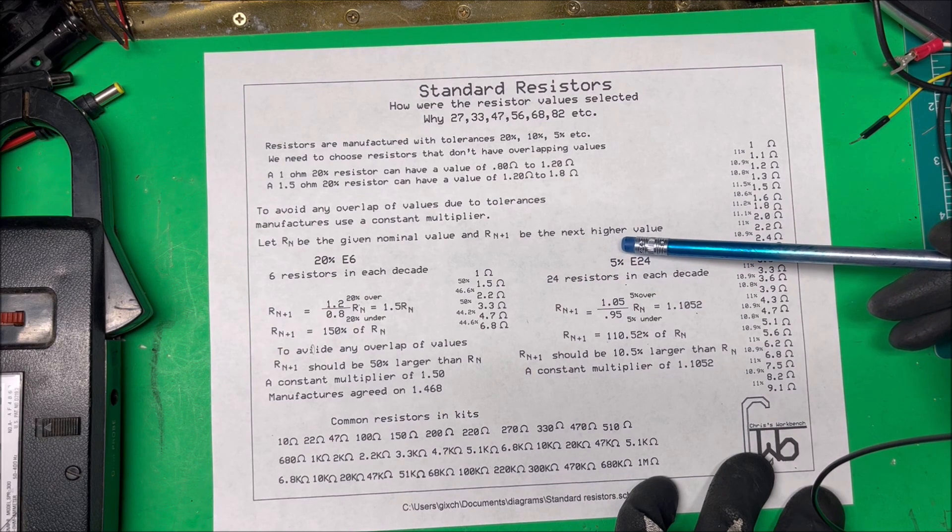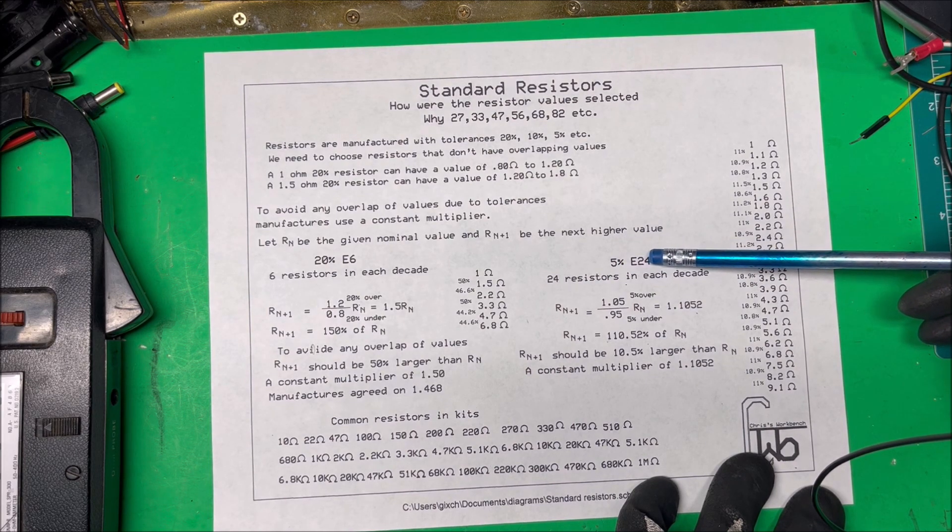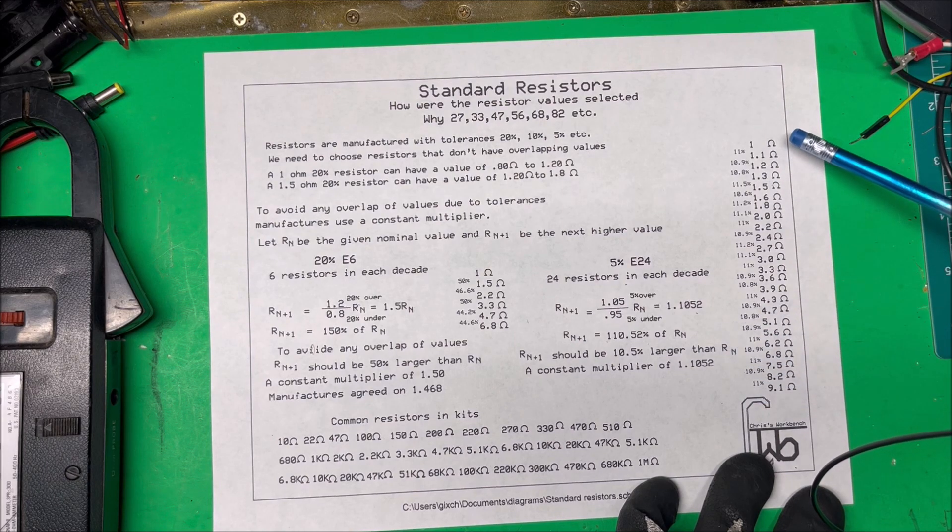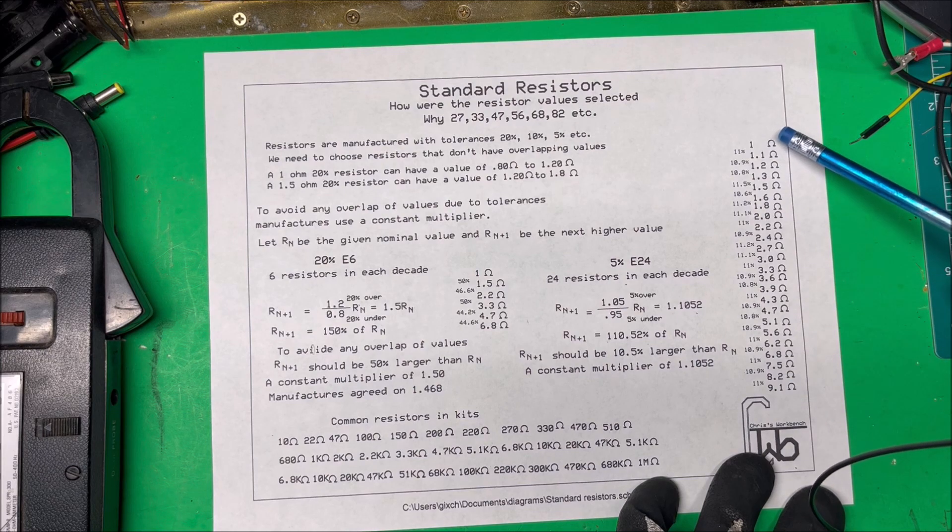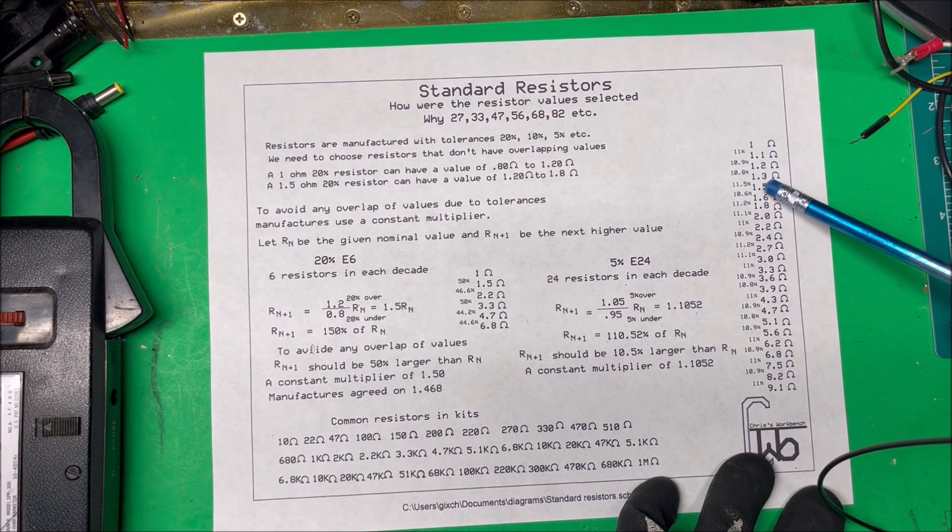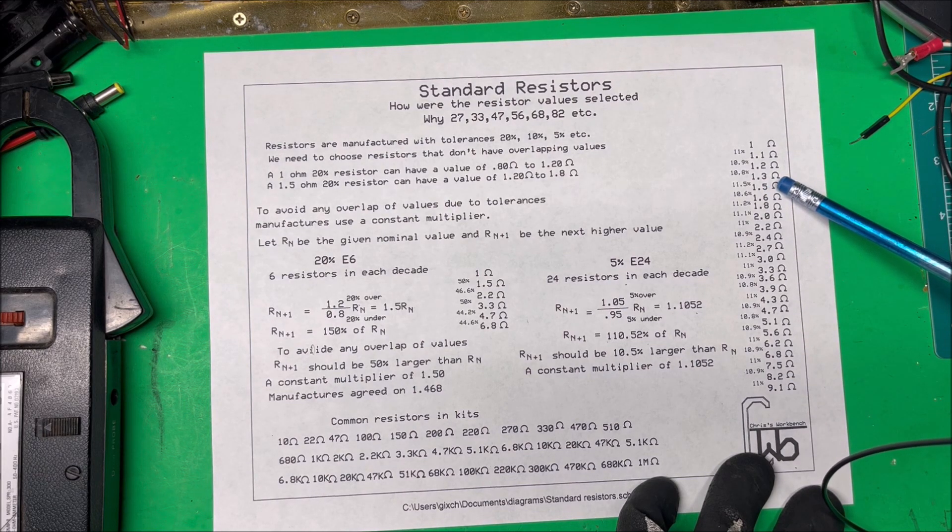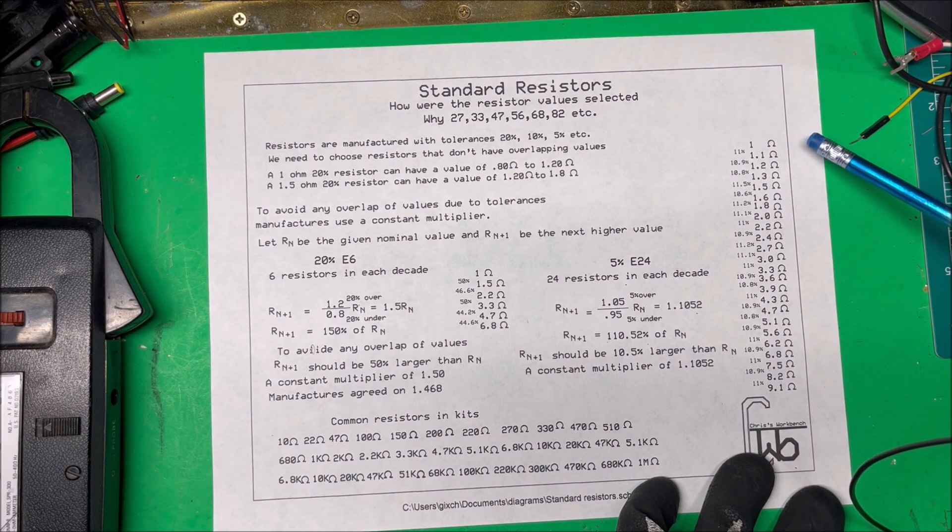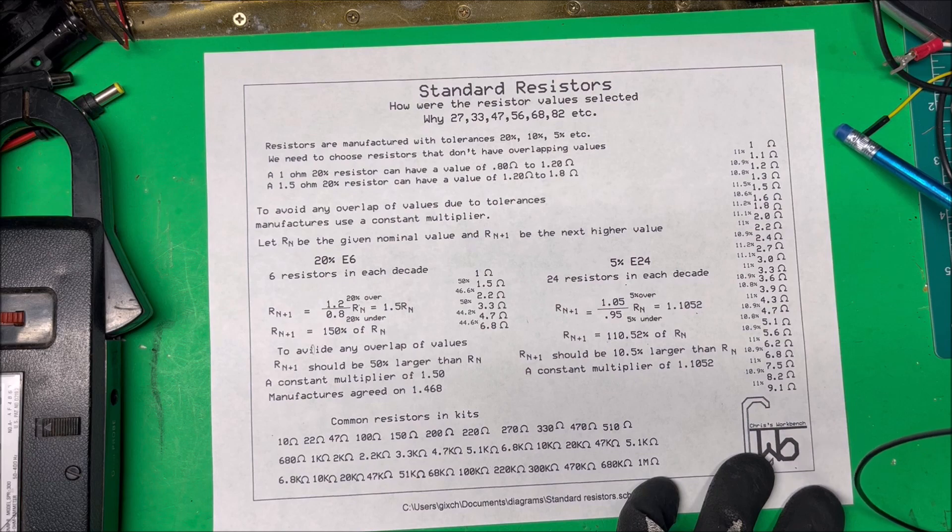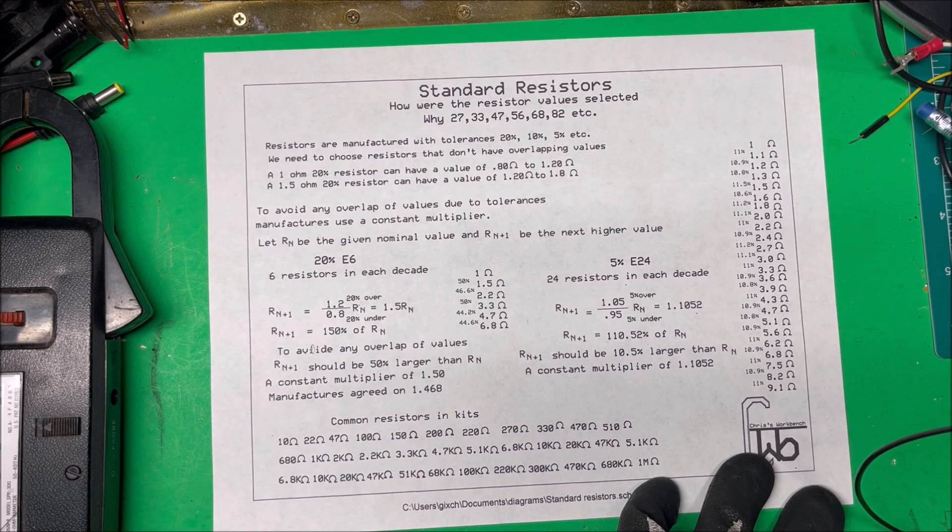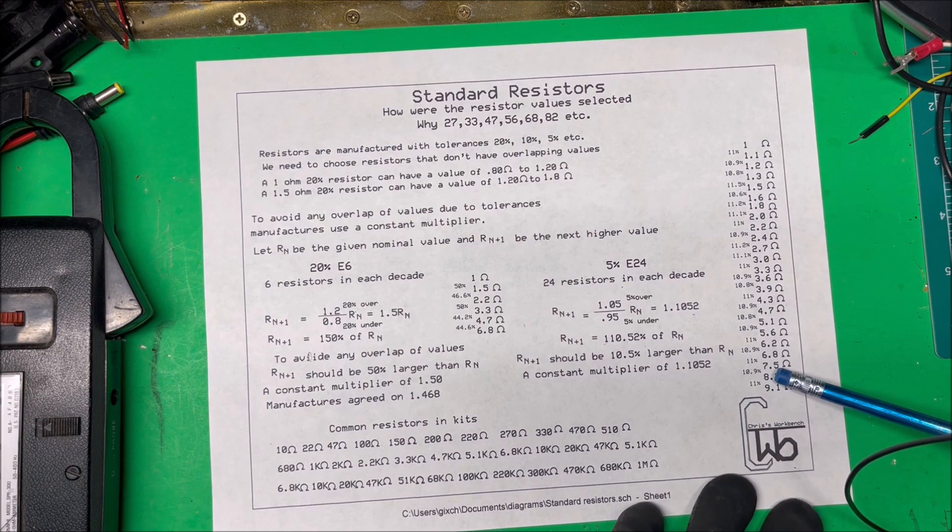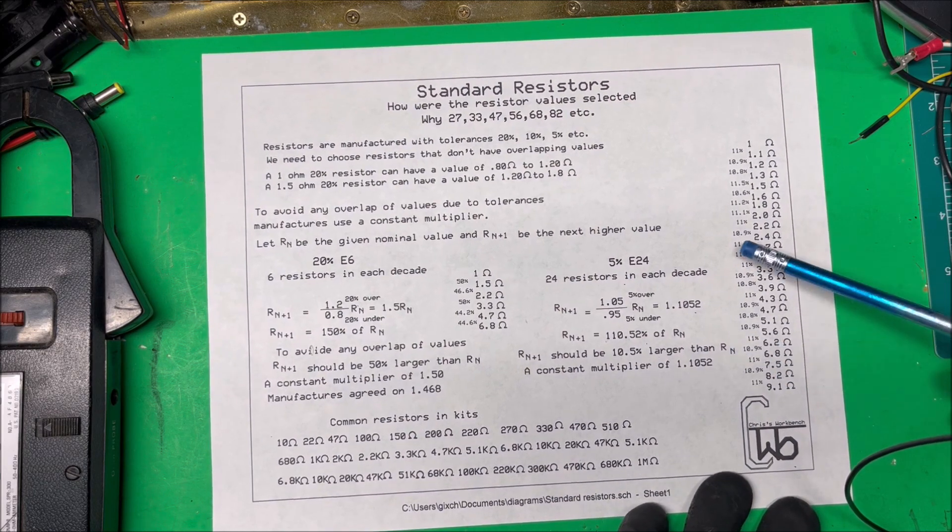The five percent is E24, that means there's 24 resistors in each decade. Here they are, the same thing - you'd have 1, and then 15, same thing 22, and so on. And 100 ohms, 1k, 10k, 100k up to megaohms - 24 of them in that series.